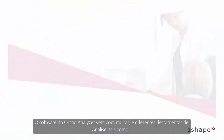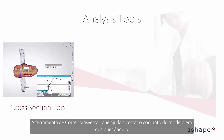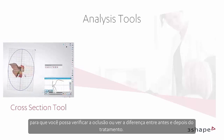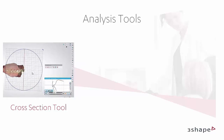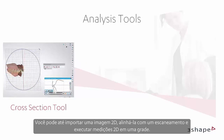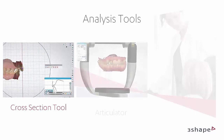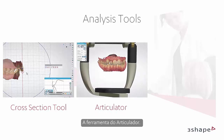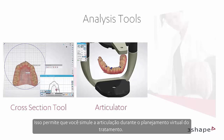The OrthoAnalyser software comes with many different analysis tools, such as the cross-section tool, which helps you cut the model set at any angle so that you are able to check the occlusion or see the difference between before and after treatment. You can even import a 2D picture, align it with a scan and perform 2D measurements on a grid. The Articulator tool enables you to simulate articulation during your virtual treatment planning.